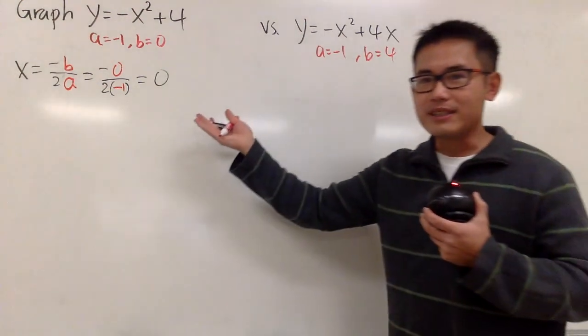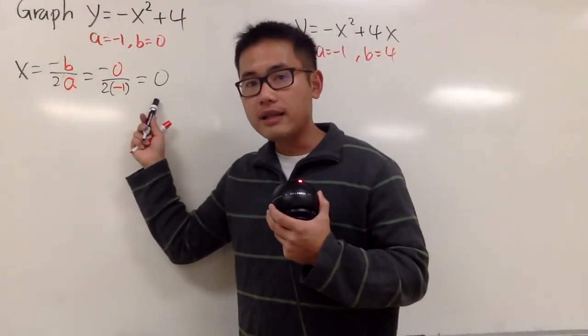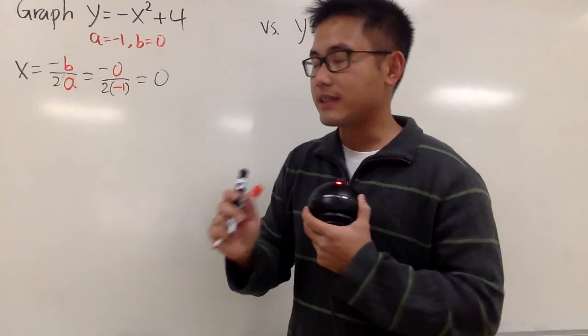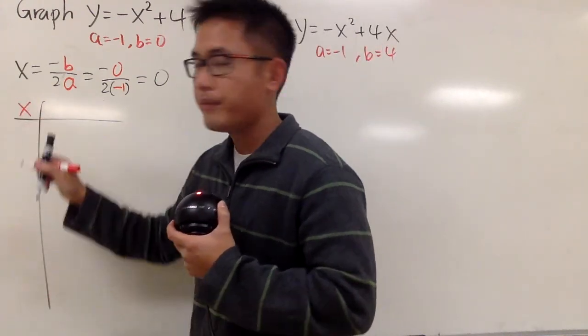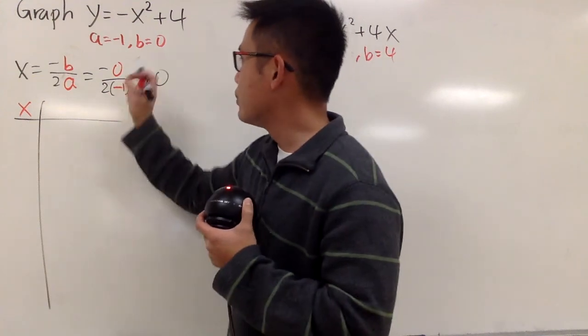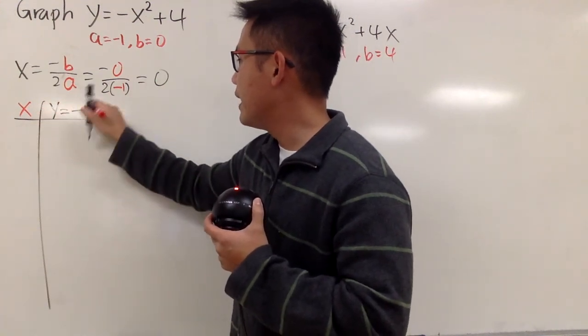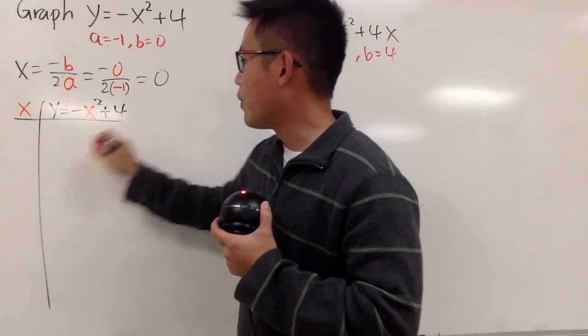And let's just focus on this real quick. When you have x is equal to 0, that's the vertex. So you're just going to go ahead and make a quick table. You are going to get some x values, and you have y is equal to negative x squared plus 4.